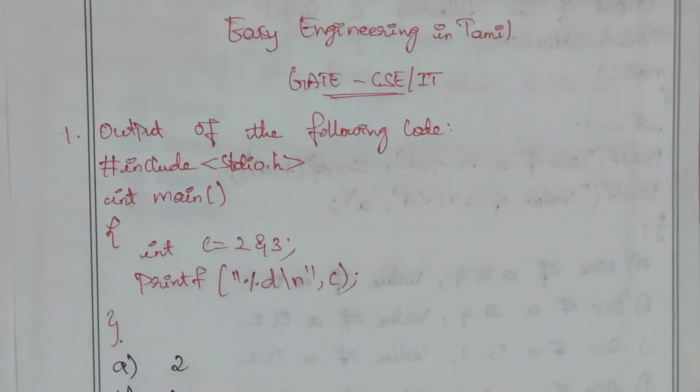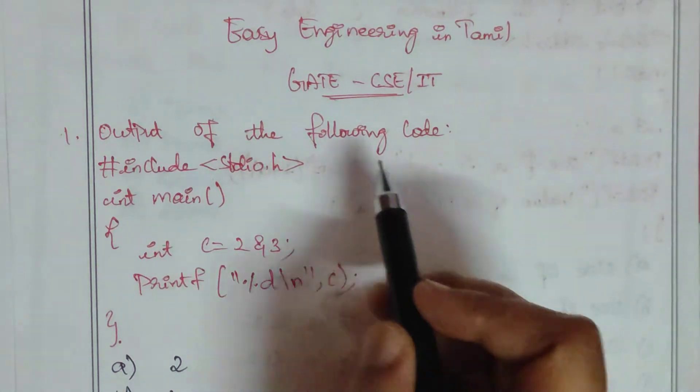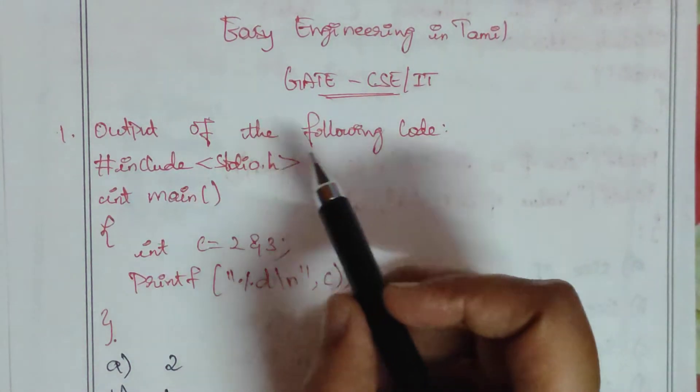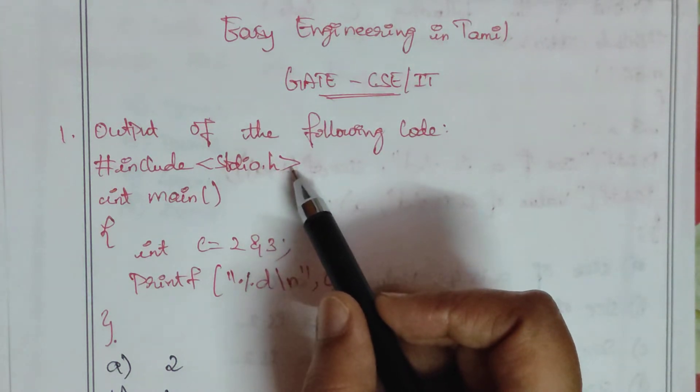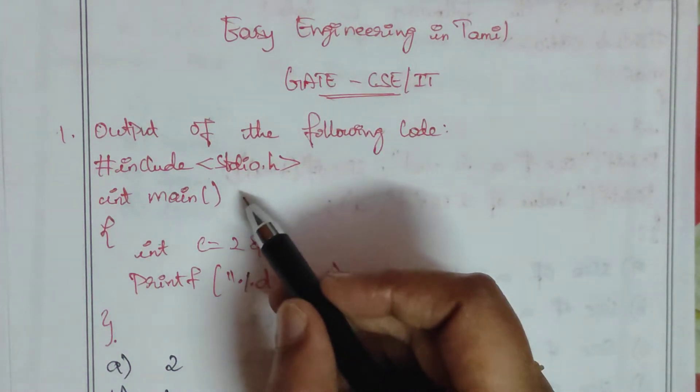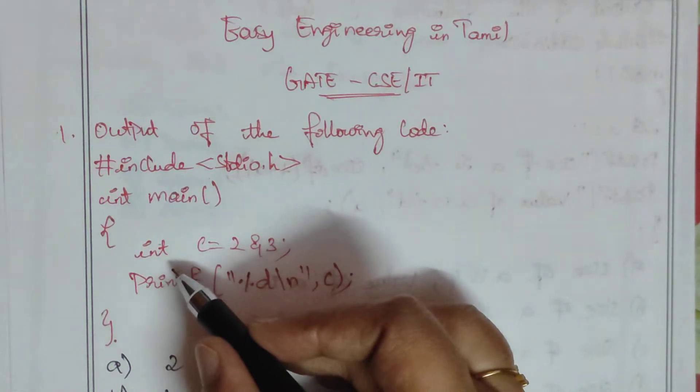Hello everyone, welcome to our channel. Today's video is about solving GATE questions. The first question is: what is the output of the following code? We are having this code with includes, hash include, and stdio.h statement.